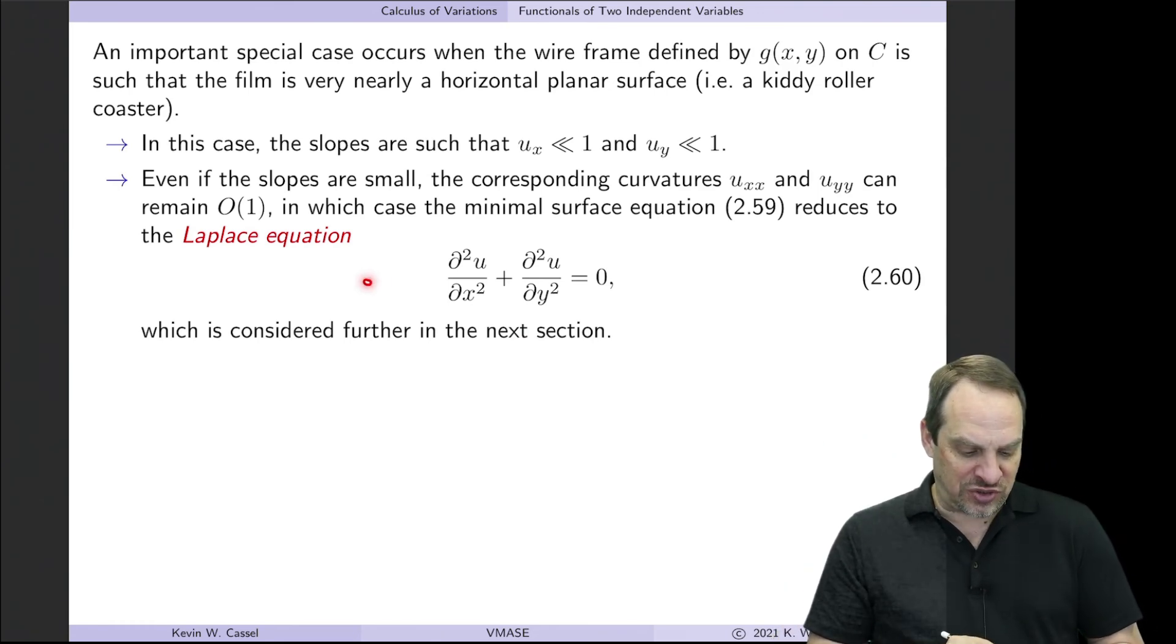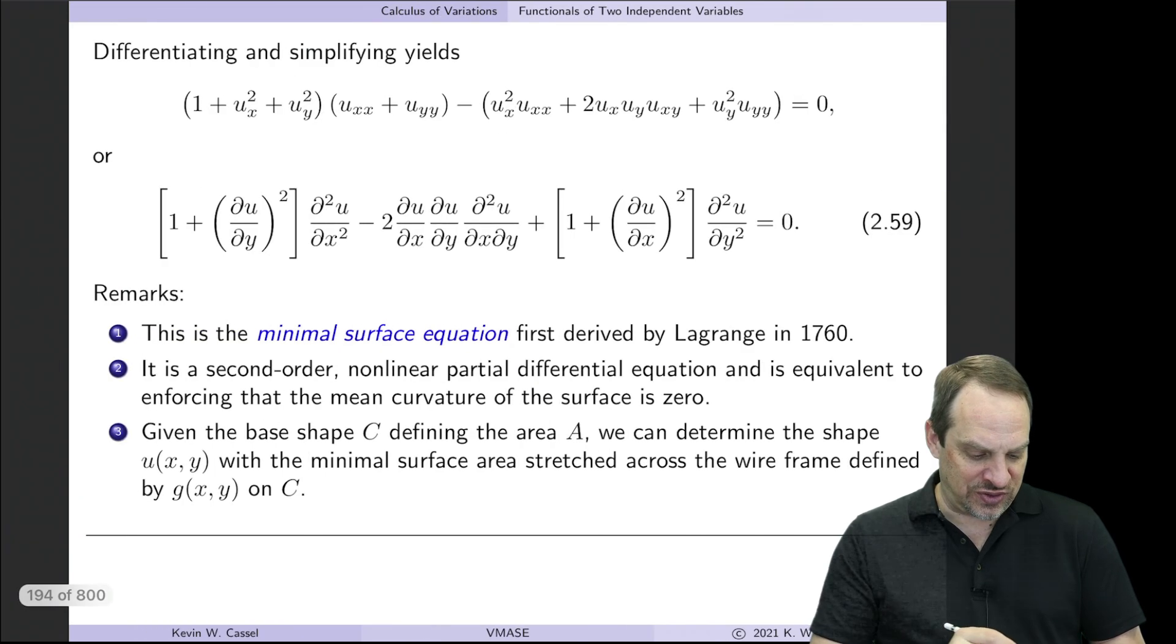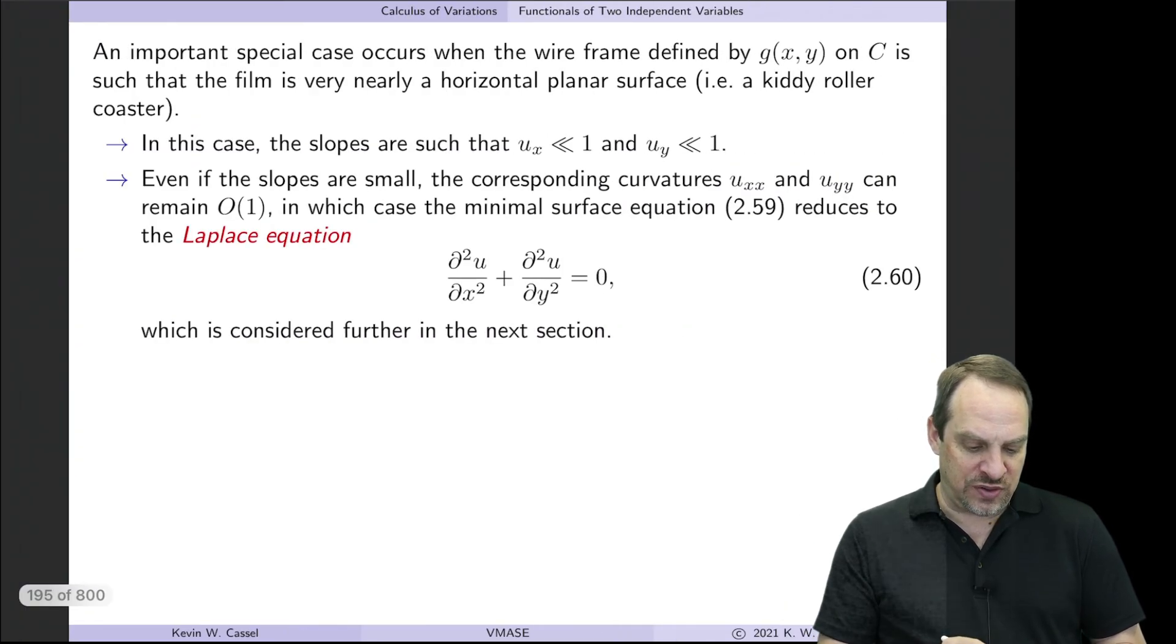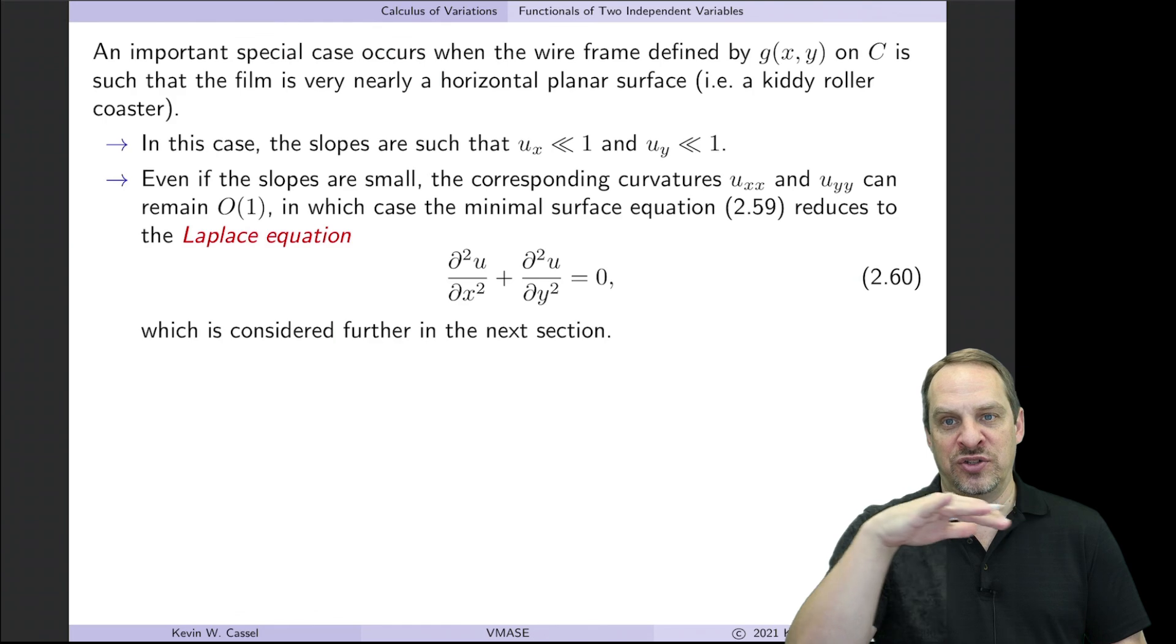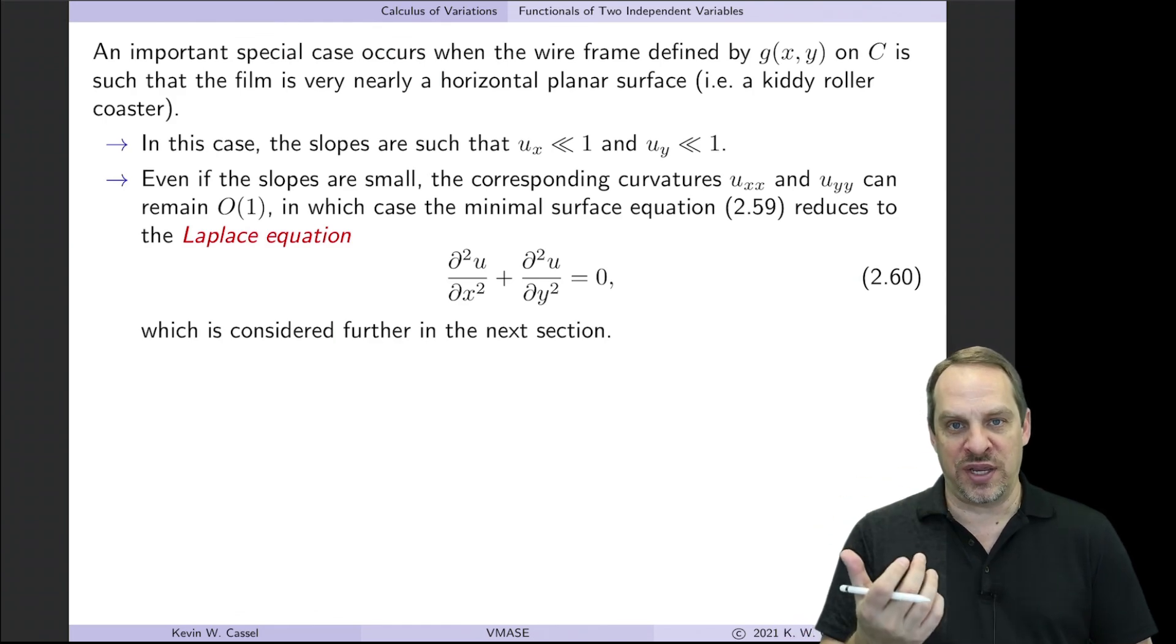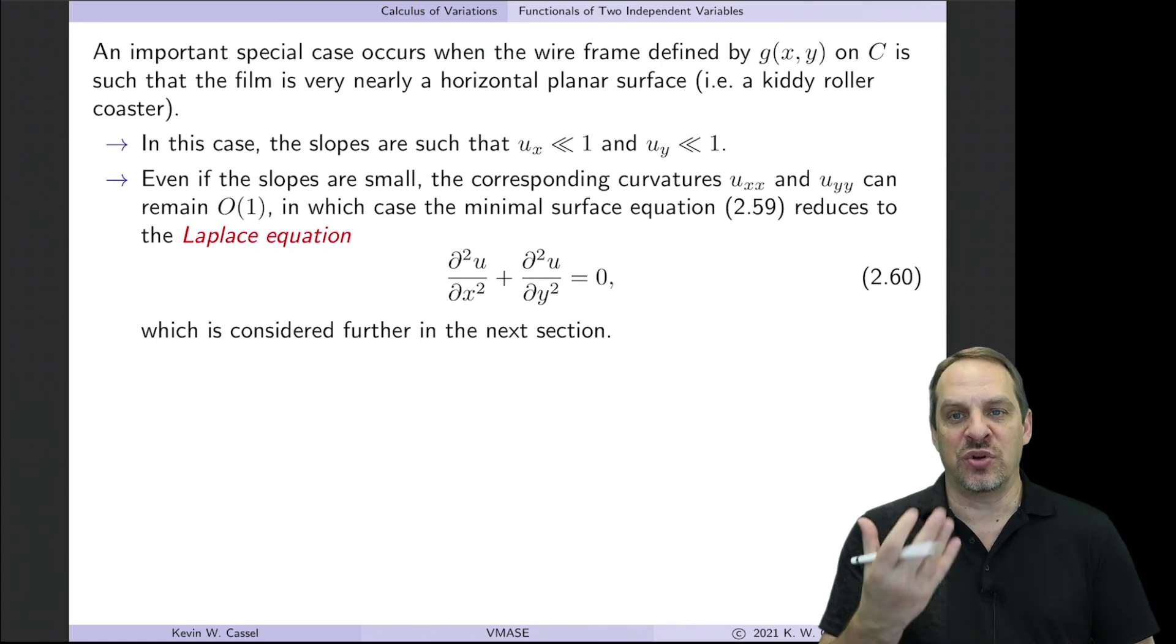In that case, you end up actually getting Laplace's equation. So this equation here, assuming that the first derivatives are very, very small, leads to Laplace's equation for that shape. So yet again, one more application that leads to the need to solve Laplace's equation in order to, in this case, get the shape of that soap film.